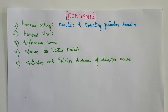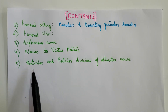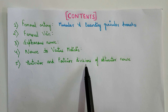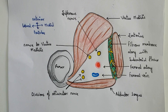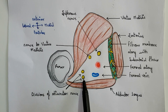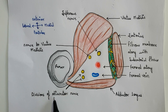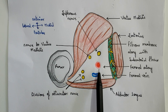Next we have the anterior and the posterior divisions of the obturator nerve. These two are the anterior and the posterior divisions of the obturator nerve. Let us review the contents once more — first we have the femoral artery.